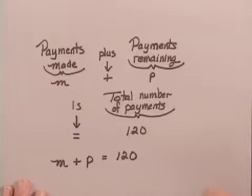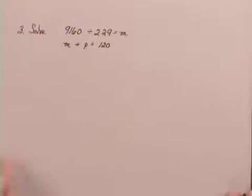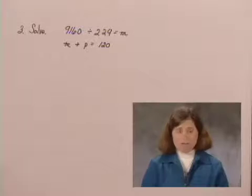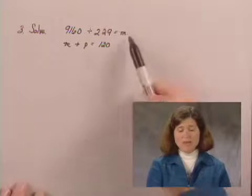We've translated the situation in the problem to mathematical language. We go to the third step, which is to solve. Remember, what we're trying to find is P, so we're going to have to do two steps. First, we're going to have to find M.